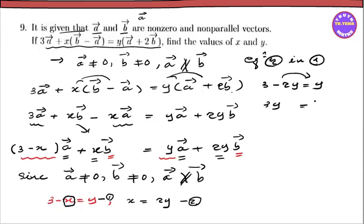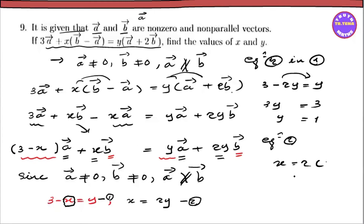Y is equal to 3y. Then 3y is equal to y, so y equals 1 from equation 2. Then x equals 2 times 1, which equals 2. Therefore x equals 2 and y equals 1.